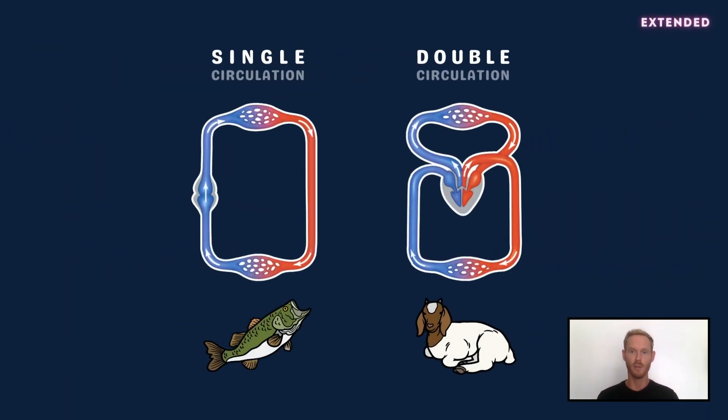Now that's all you need to know for core, but for extended, you also need to describe the single circulation of a fish and the double circulation of a mammal.